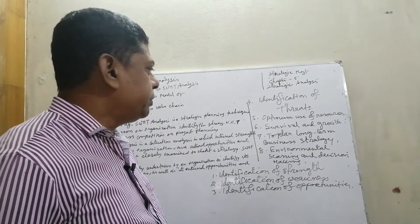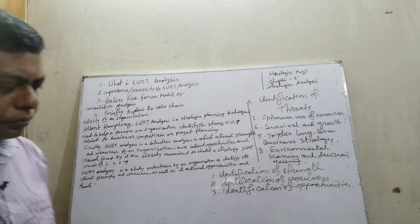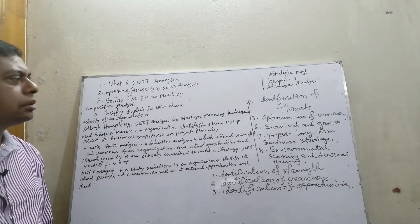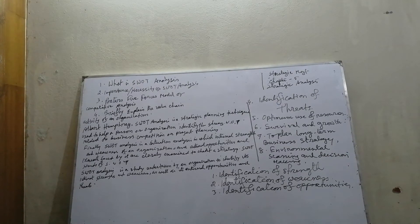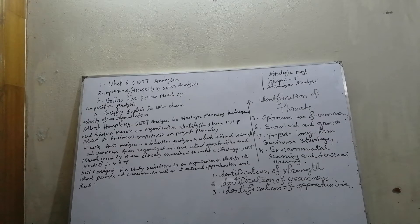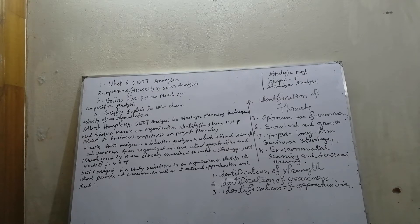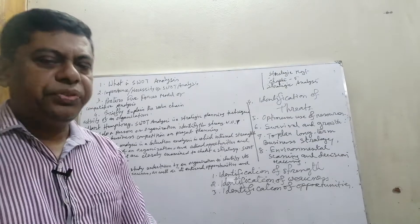Optimum use of resources is an important necessity of SWOT analysis. Proper environmental assessment helps to make optimum utilization of human, natural, and capital resources. Systematic analysis of the business environment helps the firm to reduce wastage and make optimum use of available resources. Without understanding the internal and external environment, resources cannot be used in an effective manner.